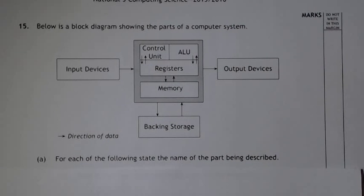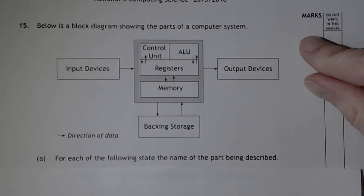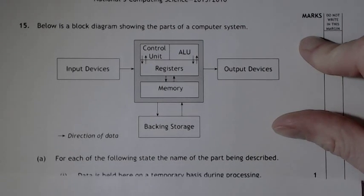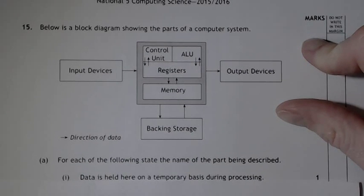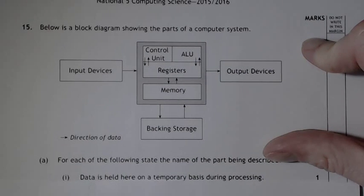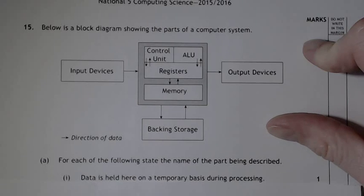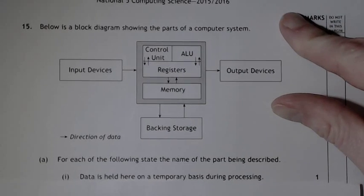The first question is, for each of the following, state the name of the part being described. So data is held on a temporary basis during processing, and money is held temporarily in the shop before it's put in the bank - it's held in the register.